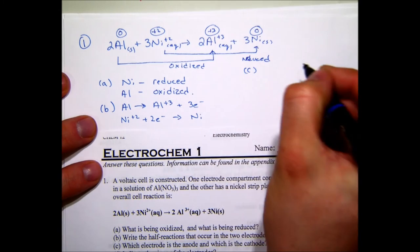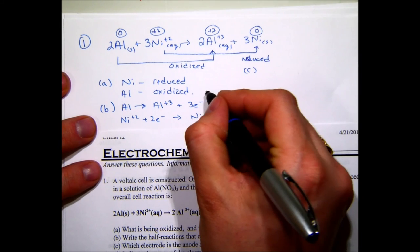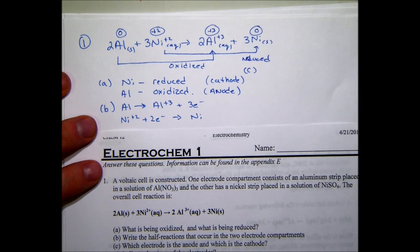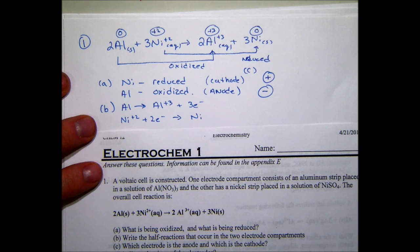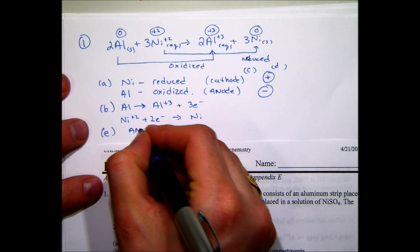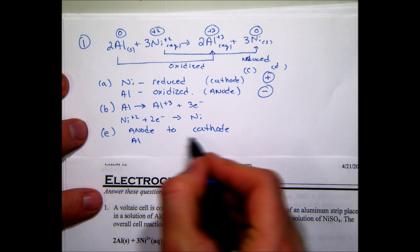For question (c), which electrode is the anode and which is the cathode? The anode is where oxidation takes place and the cathode is where reduction takes place. For question (d), the signs of the electrodes: the cathode is positively charged and the anode is negatively charged. For question (e), electrons always flow from the anode to the cathode — so from the aluminum electrode to the nickel electrode.